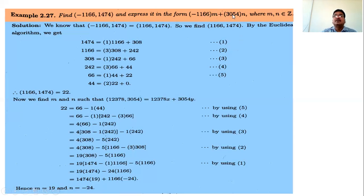Correction here: in the expression, it should be 1474 times n, not 3054. So 1474 times n gives n = 19. The answer is m = 24 and n = 19. If you calculate this, the answer is 22.